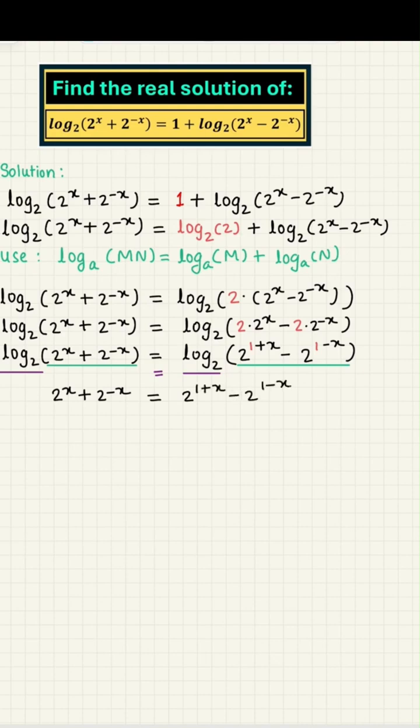We will now gather terms with the positive power of x on the left-hand side and the terms with the negative power of x on the right-hand side. Continuing our math magic, we factor out 2 to the power x on the left-hand side and 2 to the power minus x on the right-hand side.